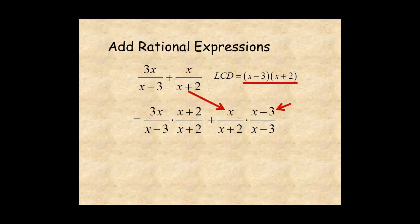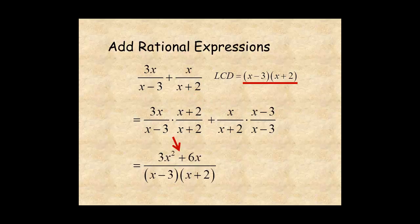Then multiply the numerators. The first term becomes 3x squared plus 6x. And the second term becomes x squared minus 3x.